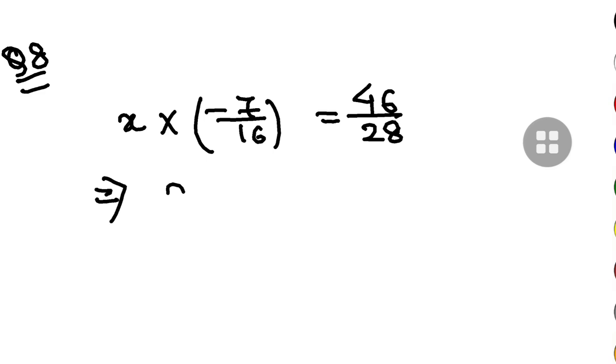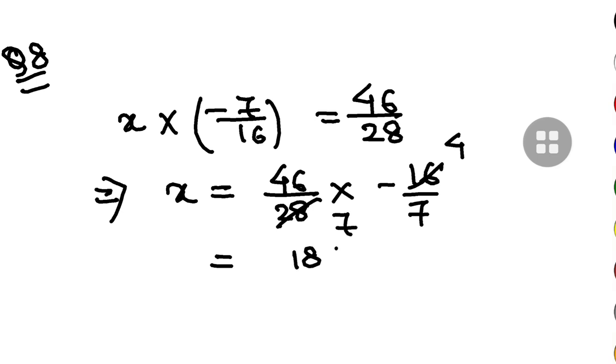So from here I have to find the value of x. So x is 46 by 28 into minus 16 by 7. This will give you by 4, 4, 7 here. And your final answer will be 184 by 49 negative. Minus 184 by 49. This is the final answer for question number 8.